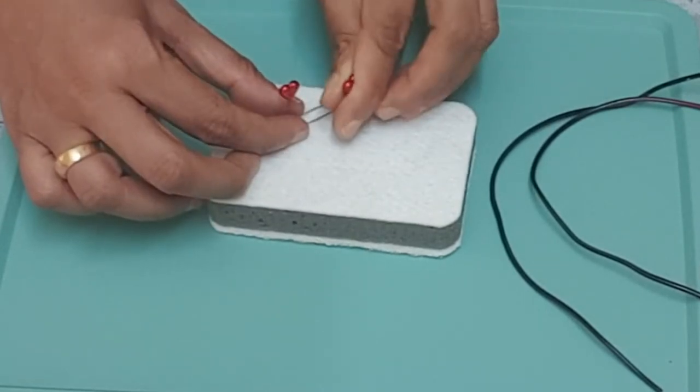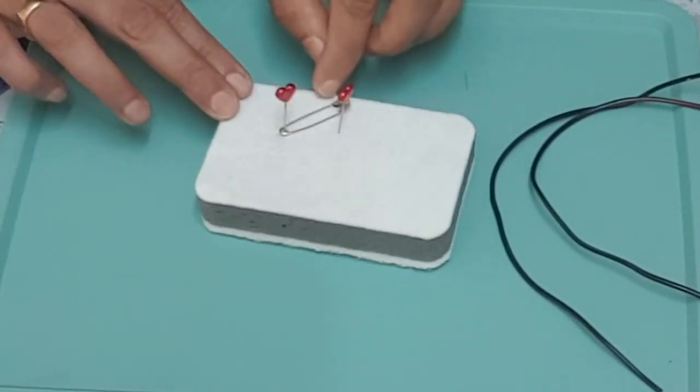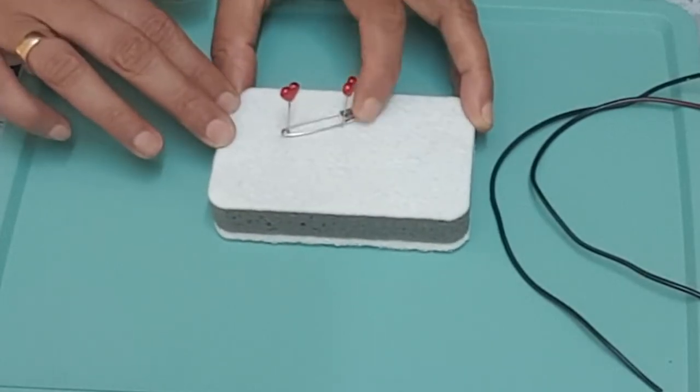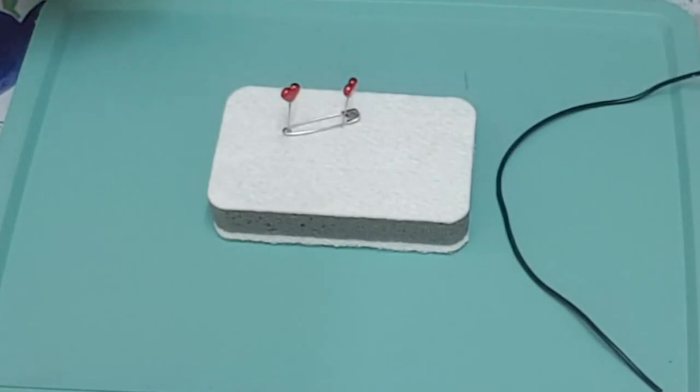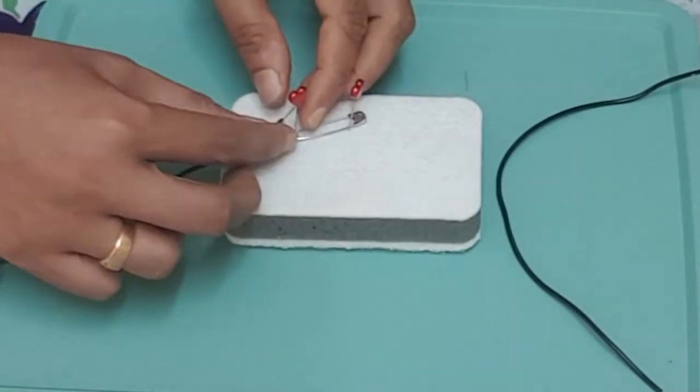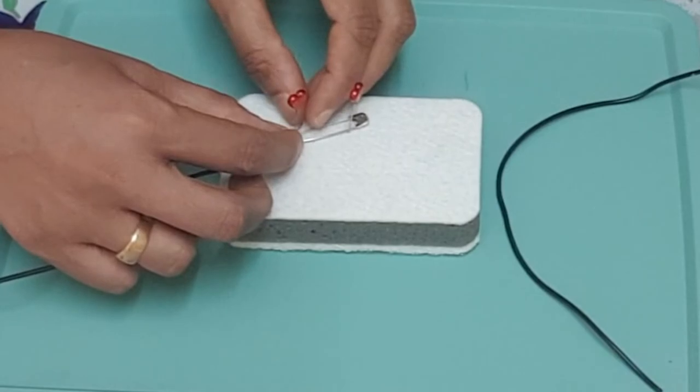Now fix the other drawing pin on the thermocol sheet in a way that the free end of the safety pin can touch it.